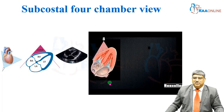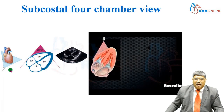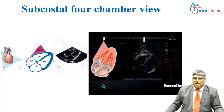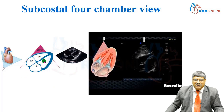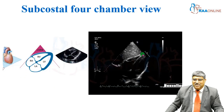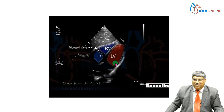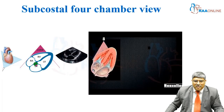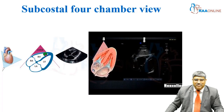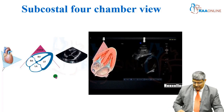Coming to the subcostal view, you place the probe in the subcostal part and you cross the liver to examine the four chambers of the heart. Here you have the right ventricle, right atrium, left atrium, and the left ventricle. You can see the right ventricle, the tricuspid valve, right atrium, left ventricle, and the left atrium. In this view, you can even look at the intra-atrial septum and the intraventricular septum along with the four chambers of the heart.